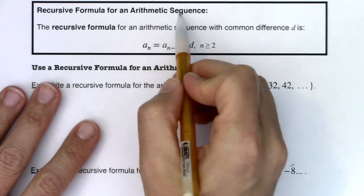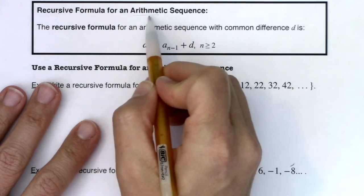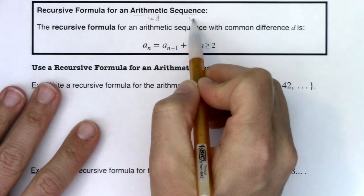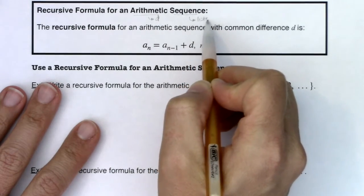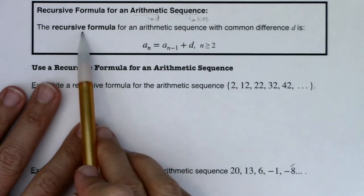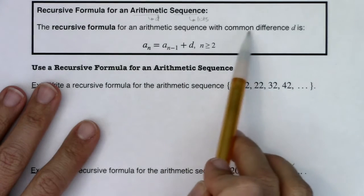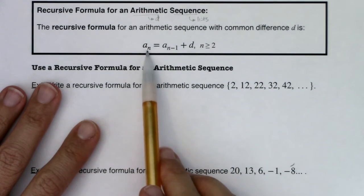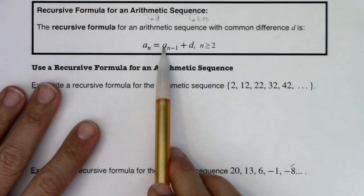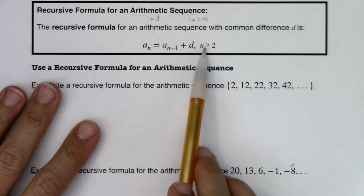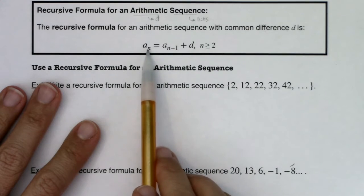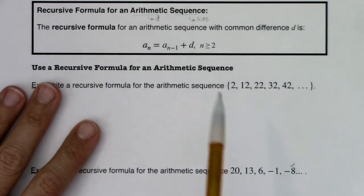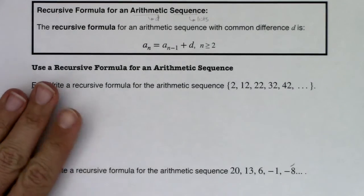When I say arithmetic sequence, you know there's going to be a d involved, right? And we're still making lists. Sequence, lists. Okay, so the recursive formula for an arithmetic sequence with a common difference d is: your current term equals the previous term plus your difference. And we say n greater than or equal to 2 because as long as this is 2 or higher, as long as I have at least one term as a starting point, we're good to go.